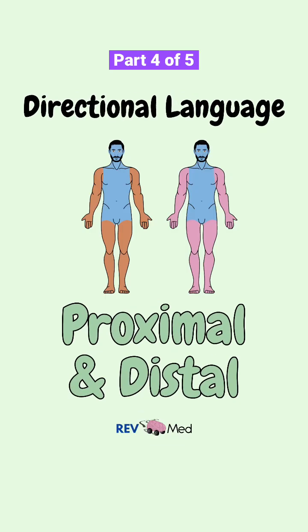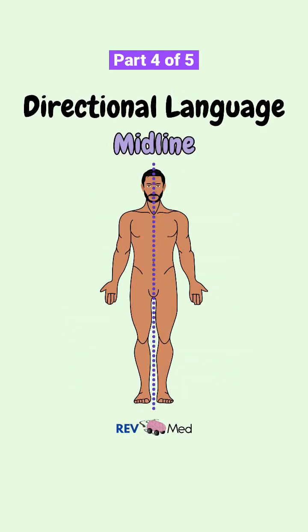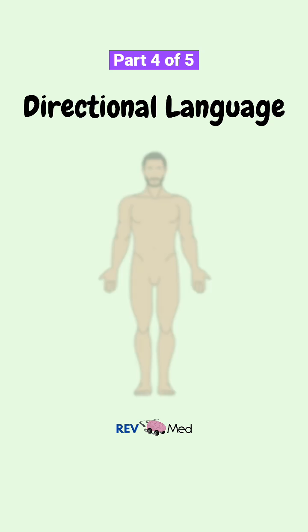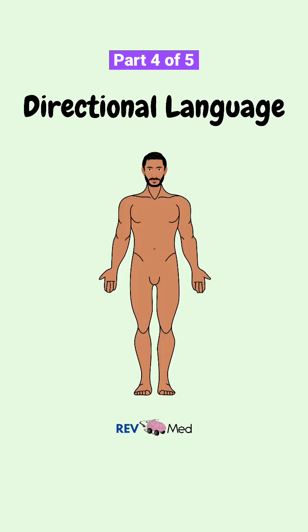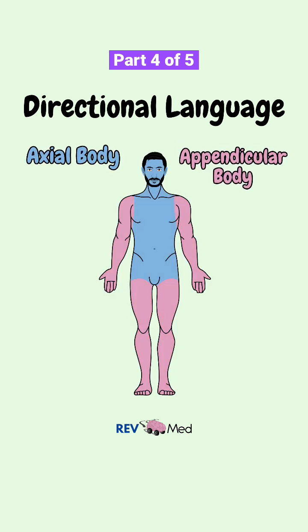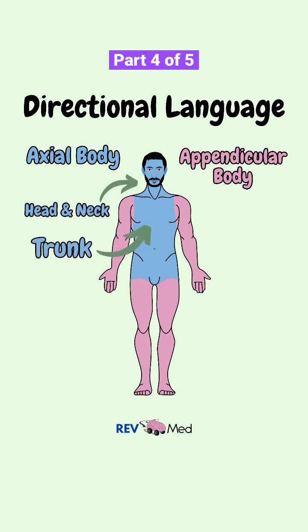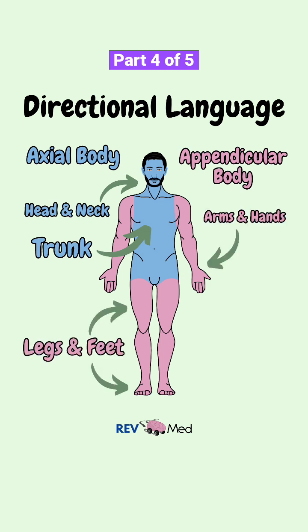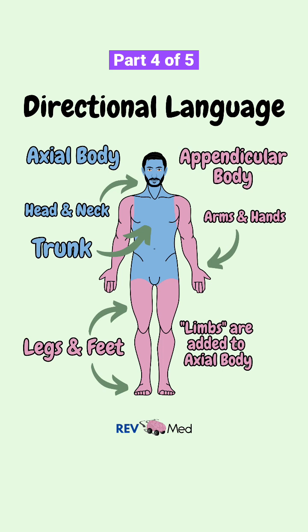Next we'll discuss the terms proximal and distal. Just like we saw the midline, we are now going to create a mental map of the axial body and the appendicular body, just like this. The axial body is the head, neck, and trunk, and the appendicular body consists of the limbs that are added to our axial body.